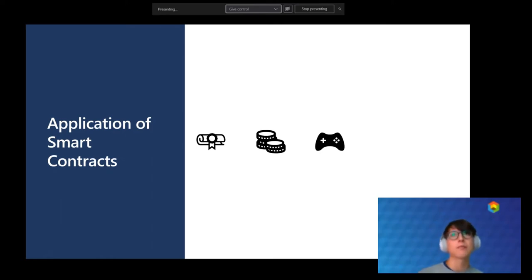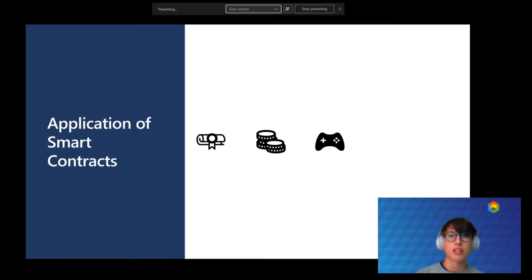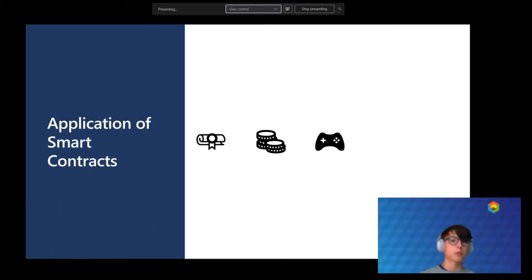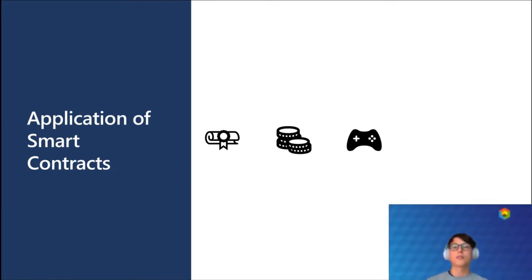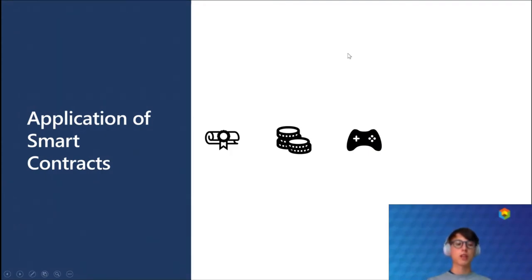Crowdfunding could also benefit from smart contracts — there have been quite successful examples, like the DAO contract, where one could fund projects and the project owner would receive the money once they fulfilled their part of the contract. However, there was a hack of the DAO contract due to security vulnerabilities, which brings us back to the very important aspect of smart contract security.